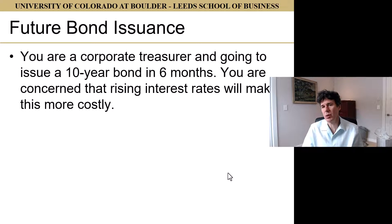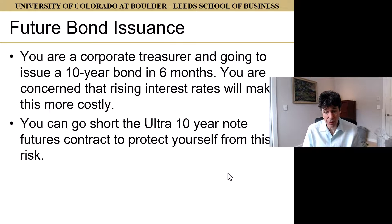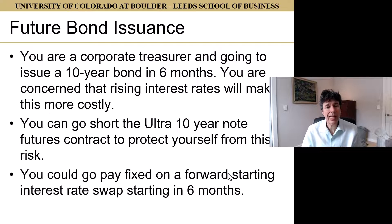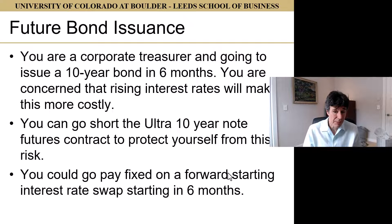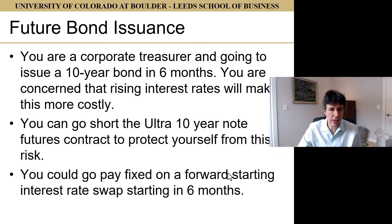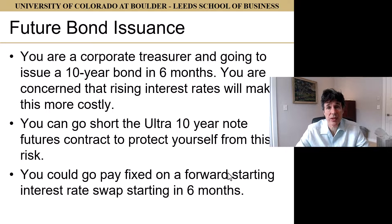For future bond issuance: if you're going to issue a ten-year bond in the next six months and are worried that rising interest rates will make it more costly, you could pay fixed on a forward-starting interest rate swap beginning in six months. If rates go up, the floating receipts on that swap offset the increased interest cost. Interest rate swaps are wildly traded — used both for speculative purposes to profit from changes in interest rates, and very often for hedging bond issuance, bond portfolios, and so on.